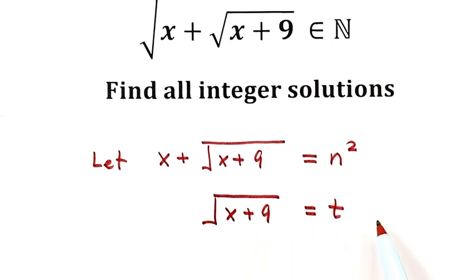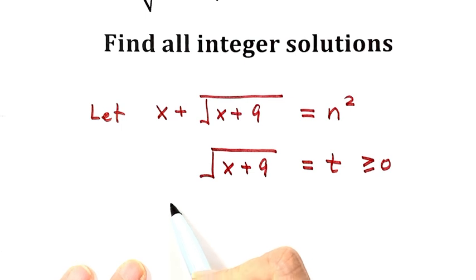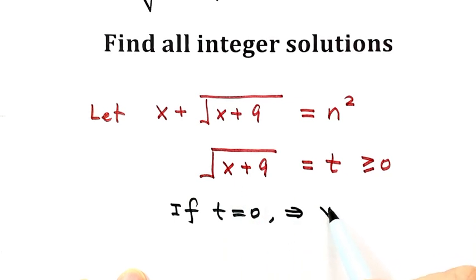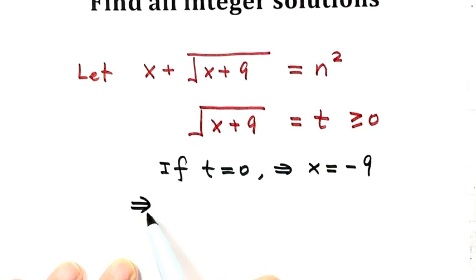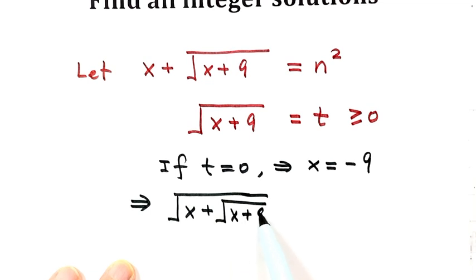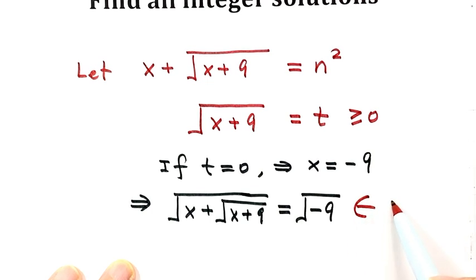Because this is a square root, t is greater than or equal to zero. Now we need to prove t is a positive integer. If t equals zero, then the inside part x must be negative 9. If we substitute negative 9 for x, we have the square root of x plus the square root of x plus 9 equals the square root of negative 9, but the square root of negative 9 is not a positive integer. So t cannot be zero.